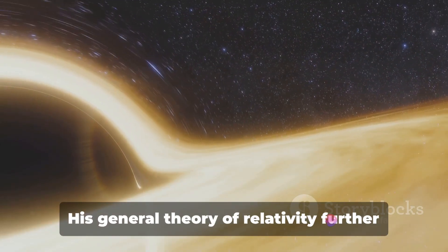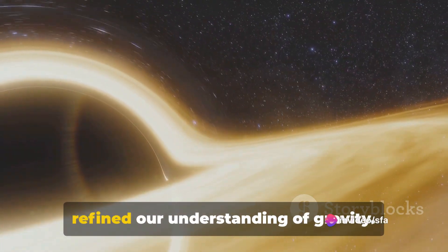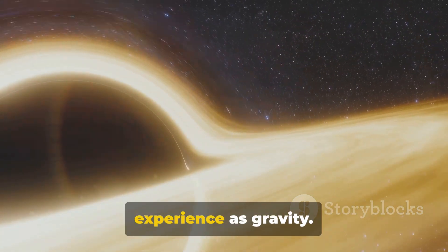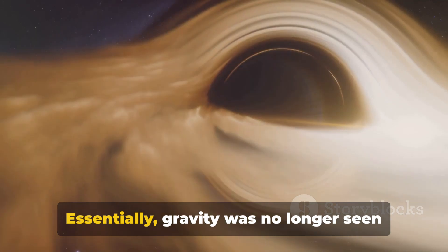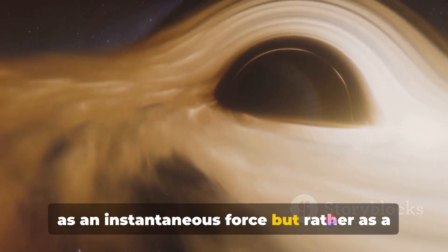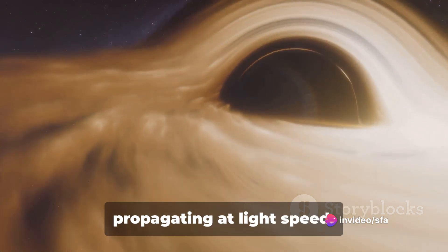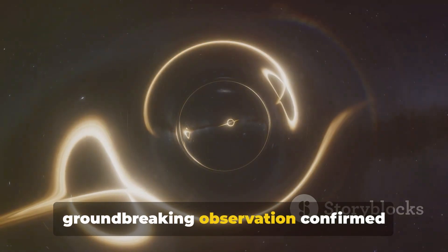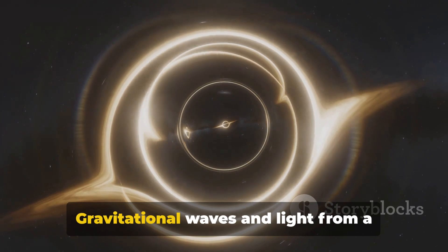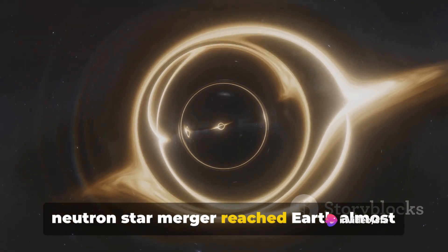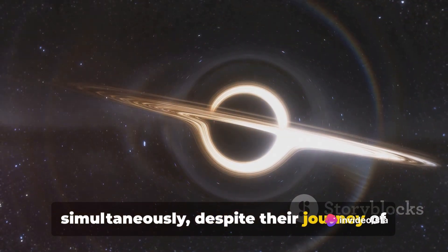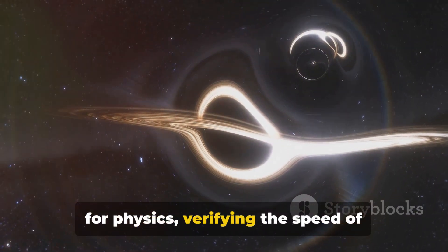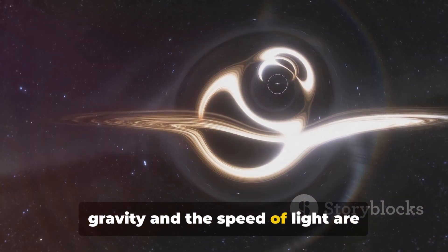But Einstein didn't stop there. His general theory of relativity further refined our understanding of gravity. He proposed that massive objects cause a distortion in space-time, which we experience as gravity. Essentially, gravity was no longer seen as an instantaneous force, but rather as a curvature in the fabric of space-time, propagating at light speed. Fast forward to 2017, when a groundbreaking observation confirmed Einstein's prediction. Gravitational waves and light from a neutron star merger reached Earth almost simultaneously, despite their journey of over 100 million light years. This observation was a triumphant moment for physics, verifying the speed of gravity and the speed of light are virtually the same.